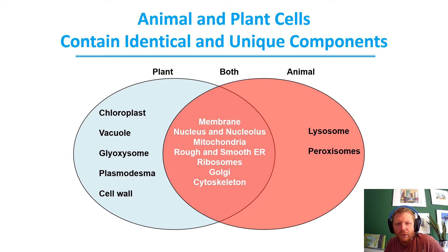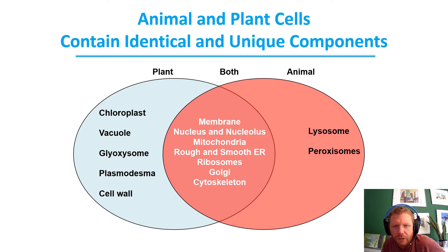If there's no cell wall, there's no plasmadesma, so those kind of go hand in hand with one another. Both are going to have membrane, nucleus, nucleolus, mitochondria, rough and smooth ER, ribosomes, Golgi, and cytoskeleton. And animals are going to have lysosome and peroxisomes.